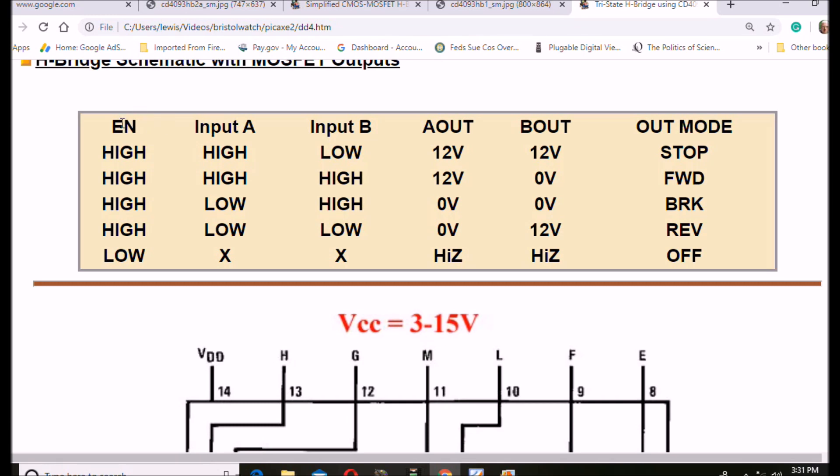Again, as long as enable is high, input A and B, the outputs are identical. Other than if we take enable low, then the outputs are going to be high Z and nothing happens. Note the difference here.